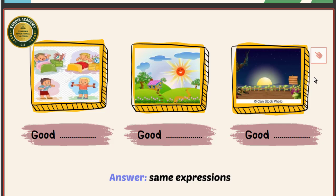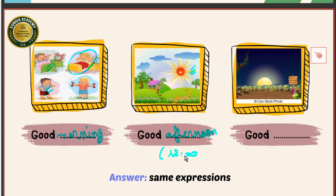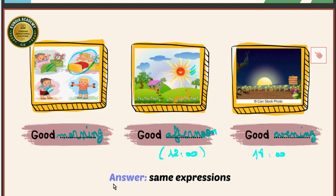As you can see in the picture, in the morning someone is getting out of bed and brushing their teeth — so in the morning I say 'good morning.' When the sun is in the middle of the sky, I say 'good afternoon' — the afternoon is the time after 12 o'clock, after midday. When night starts to fall, I say 'good evening,' which in some countries begins at six o'clock or later.